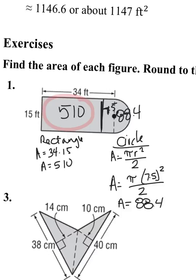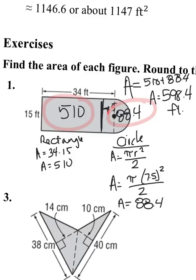The area of half a circle was 88.4. So this piece is 88.4. So if I take the rectangle and I add the half circle, the area of the whole composite figure is 510 plus 88.4. Area equals 598.4 feet squared.